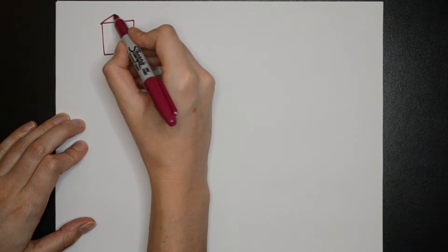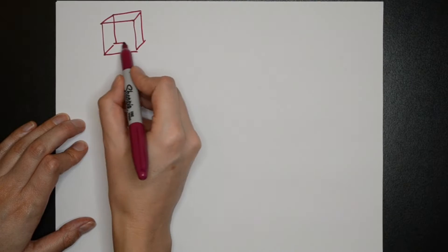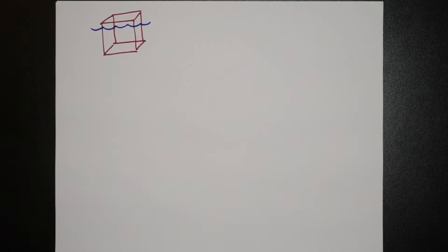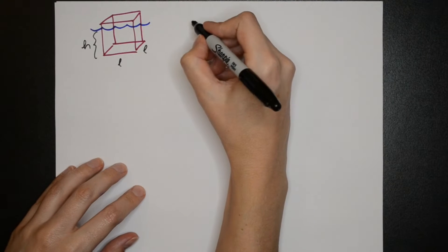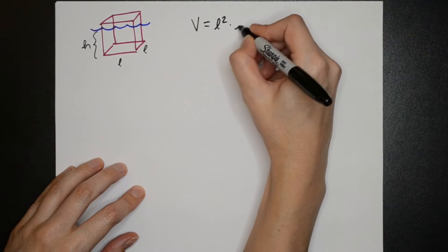For a cube the water will come up to some height which we'll label as H and the base will be length times length. Our volume will be V equals L squared times H.